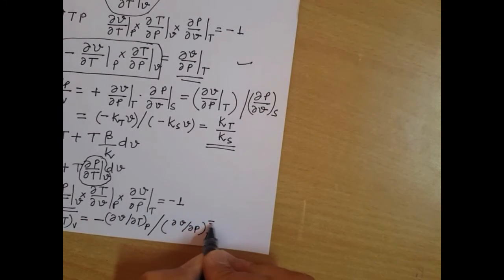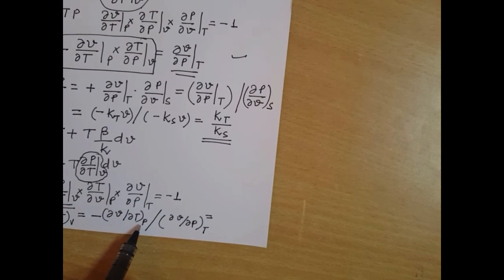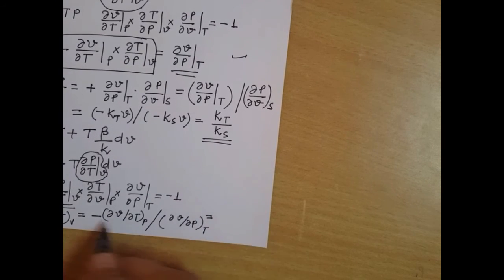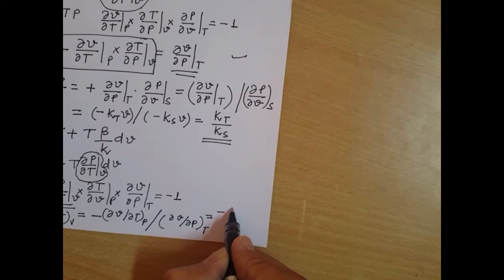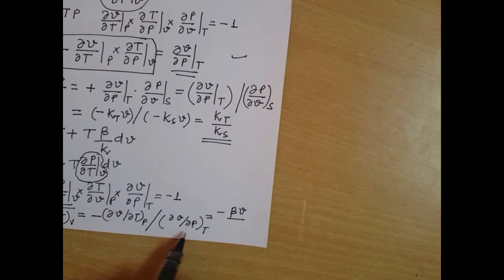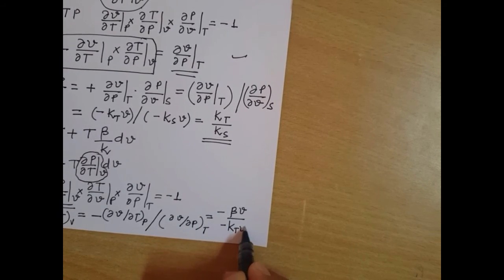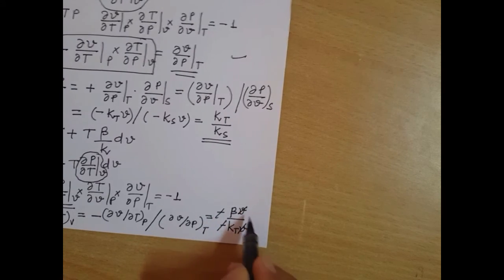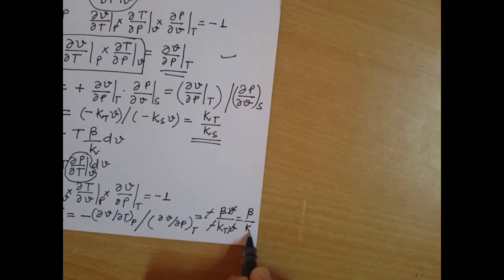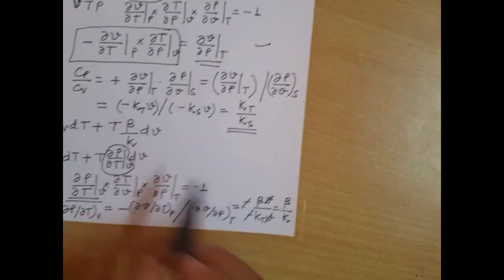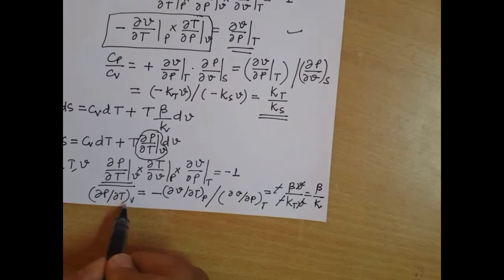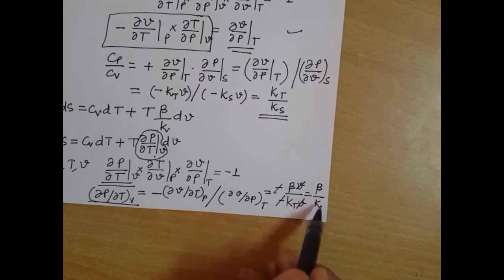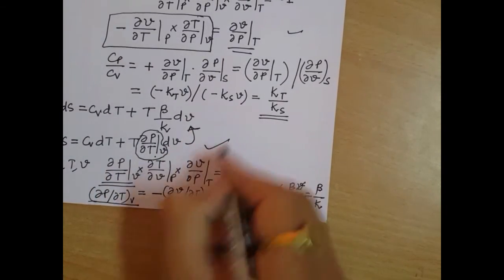We find that minus del V by del T at constant pressure equals beta times V, and del V by del P at constant temperature equals minus KT times V. So the negatives cancel and you get beta by K. Therefore, replacing del P by del T at constant volume with beta by K in the TdS relation, we get TdS equals Cv dT plus T times beta by K times dV. Hence this is proved. This has also been asked in one of the engineering services examinations.